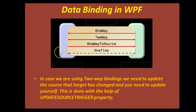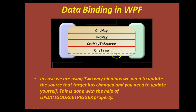In one way binding, you can only bind from source to the target. In two way binding, you can bind from source to target, and when the target property changes, the source property will also change. One way to source binds in the opposite direction — when you change the target, it will change the source, but vice versa will not be true. One time binding basically happens during application initialization, so this binding is defined in the constructor of the application. All these points will be very clear once we go through the example.